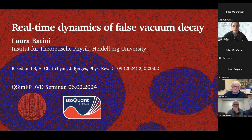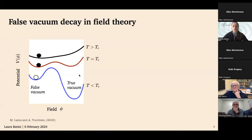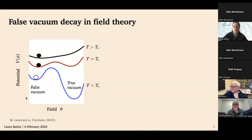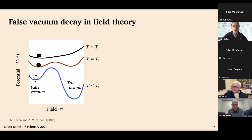Let me start with an introduction of what I mean by false vacuum decay in field theory and motivate why we need real-time methods to describe it properly. Imagine we have a scalar, real-valued field φ living in a potential V(φ). If you are above the critical temperature T_c, the field sits at rest in the minimum of this potential. But if the temperature is lowered below T_c, the system may become trapped in a local minimum — the false vacuum — in contrast to the global ground state, which is the true vacuum.